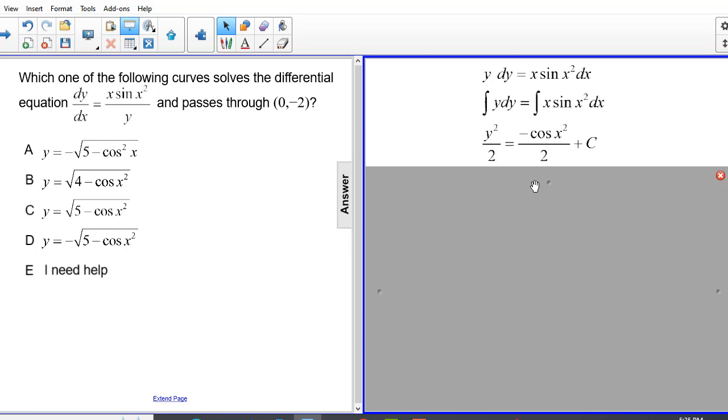To clean this up a little bit, I'm going to multiply both sides by 2 to get y squared equals negative cosine x squared plus c.